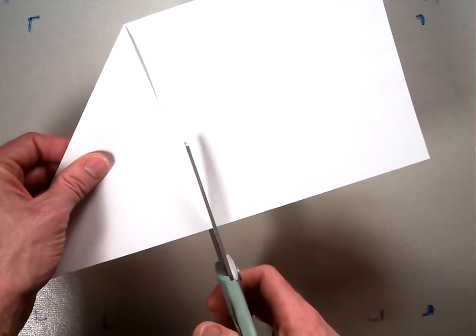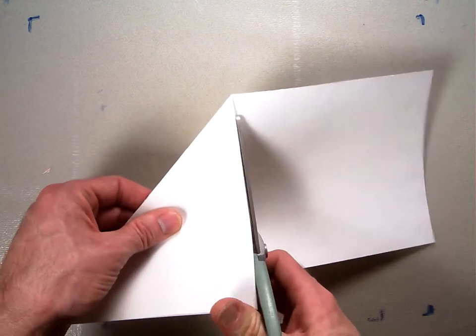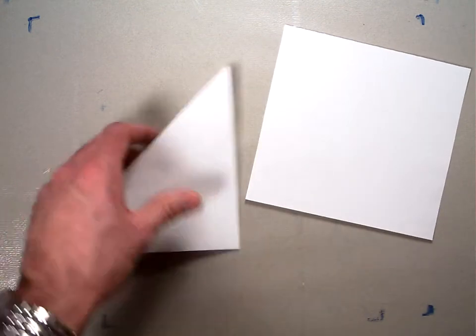Then you can take this bottom sheet off, and if you're in class, you can use this bottom square to make your stem, looking at the other video of how to make a stem.